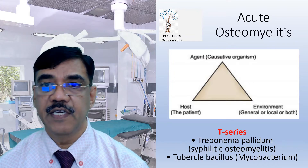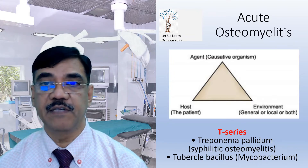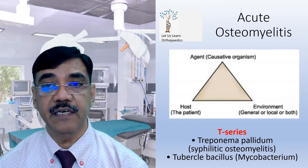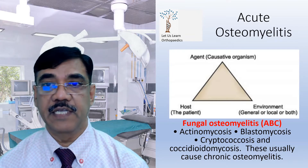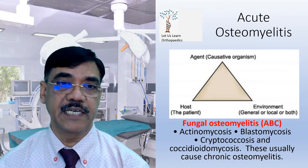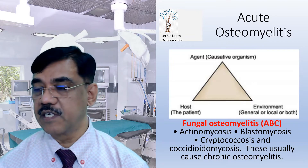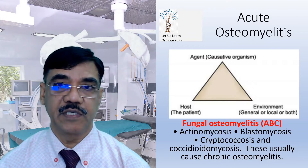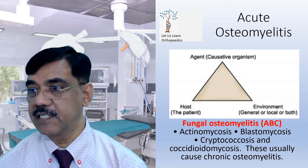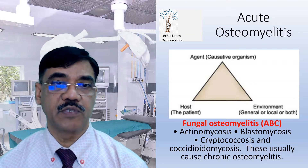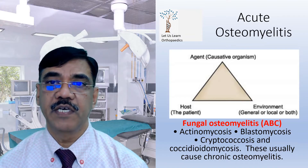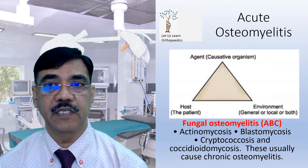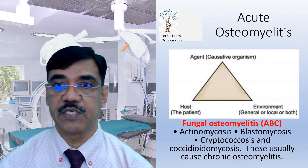T-series: Treponema pallidum, causing syphilitic osteomyelitis, and Mycobacterium tuberculosis (tubercle bacillus). It could also be fungal osteomyelitis. The fungi responsible can be remembered using the mnemonic A-B-C: A stands for actinomycosis, B for blastomycosis, C for cryptococcosis and coccidioidomycosis. These usually cause chronic osteomyelitis.